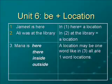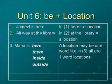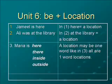You know location — location means a place. Look at example number 1: Jameel is here. And example number 2: Ali was at the library. In both sentences, the noun is followed by B, and then a location. Here tells us where Jameel is, and at the library tells us where Ali was. So sometimes when we use B, we use it with a location.